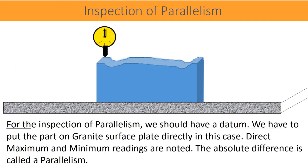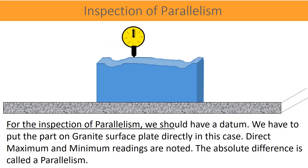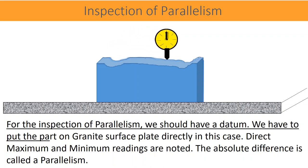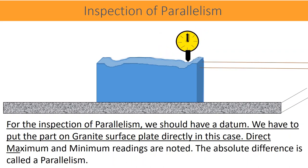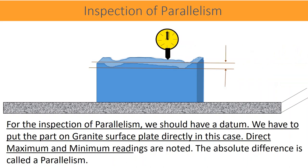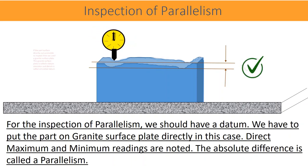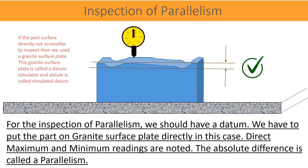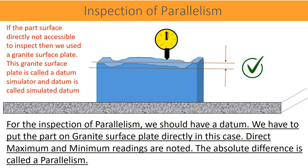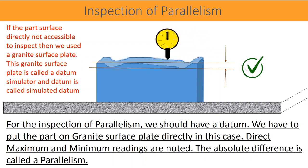For the inspection of parallelism, we should have a datum. We have to put the part on a granite surface plate directly in this case. Direct maximum and minimum readings are noted. The absolute difference is called parallelism. If the part surface is not directly accessible to inspect, then we use a granite surface plate — this granite surface plate is called a datum simulator and the datum is called a simulated datum.